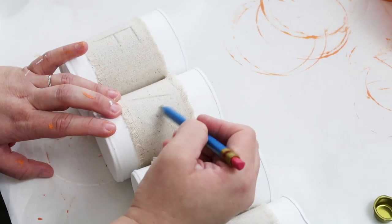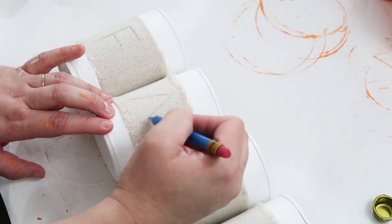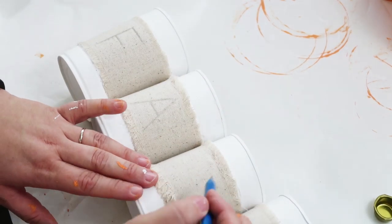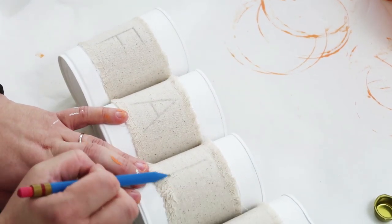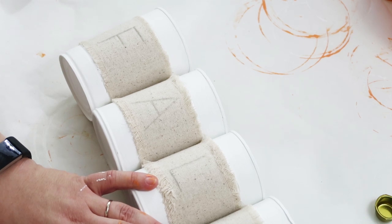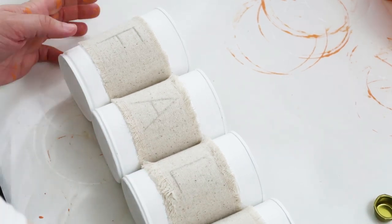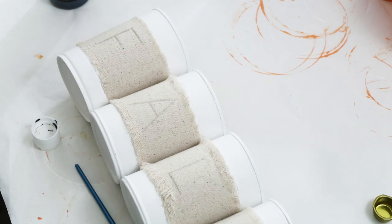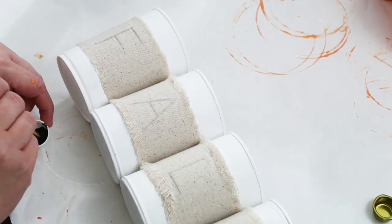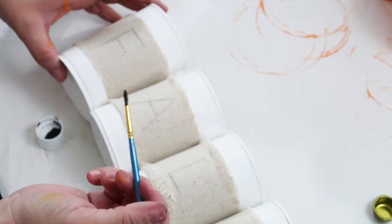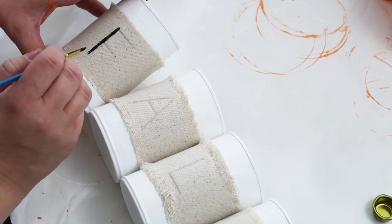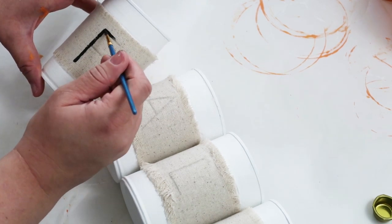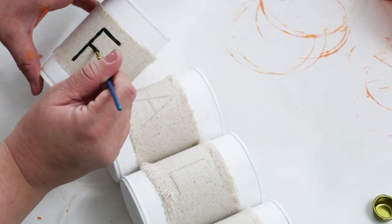Once that was all hot glued into place I took all the cans and lined them up next to each other and I free-handed on the letters F-A-L-L to spell out fall. It was just a simple real quick sketch. I think anybody can do this. Once I sketched them on with a pencil I just took a small paintbrush with black paint and went right over it.